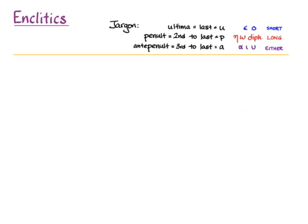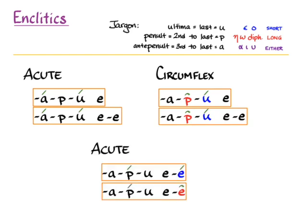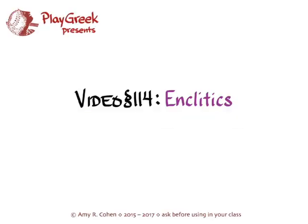Let me summarize. An enclitic doesn't change the accent of the word before unless it's in one of these situations: where an accent is as far back as it can go — with an acute on the third to last or a circumflex on the second to last — in which case the enclitic throws an extra acute accent back onto the word before. And in the situation where you have a two-syllable enclitic after a word that has an acute on the second to last syllable, the enclitic itself will get an accent on the second syllable — an acute if that second syllable is short, and a circumflex if it is long. It's important to recognize these things so you can tell when you're looking at an enclitic form rather than an accented form — that can be the difference between asking a question and making an indefinite statement. That is enclitics summarized. Have fun spotting them in Greek in the wild.